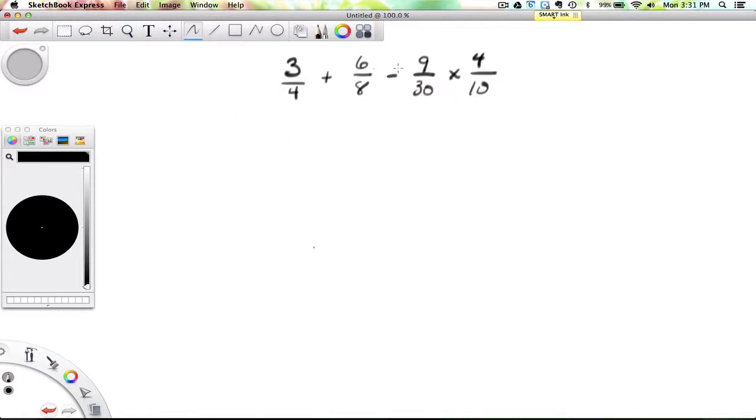So here's a BEDMAS question with fractions, and the question says 3 quarters plus 6 eighths minus 9 thirtieths times 4 tenths.